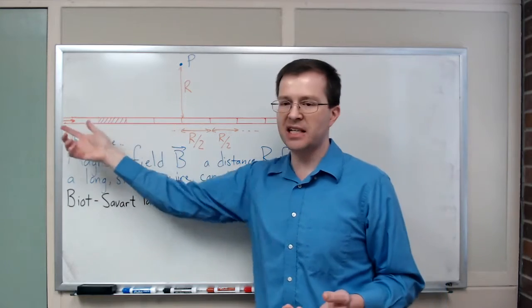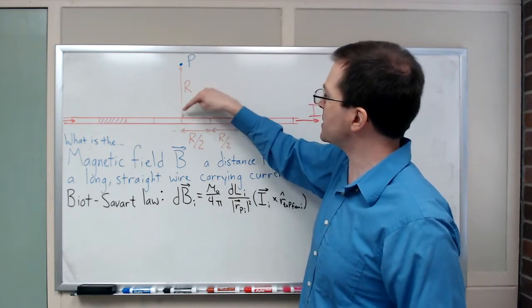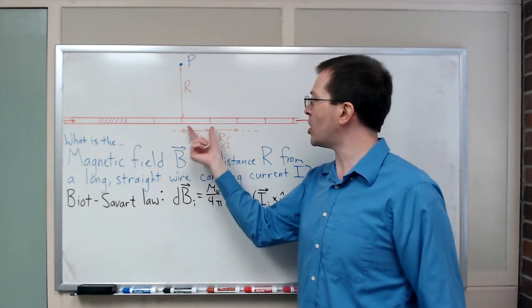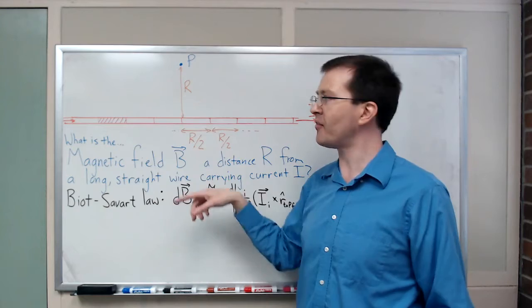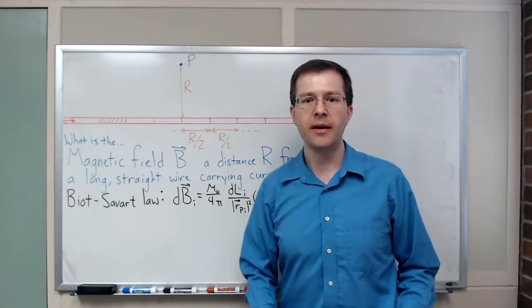We'll look at this wire and break up this long wire into pieces that are pretty decently sized. If my point P is a distance R away from the wire, I'm going to break up the wire into chunks that are length R over 2, half the distance to point P as chunks of wire. That's my plan.